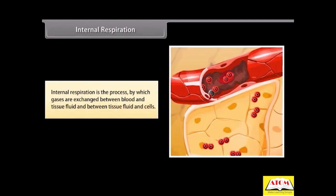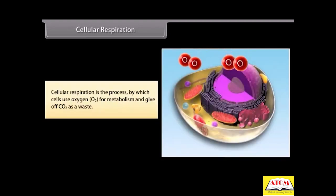Internal respiration. Internal respiration is the process by which gases are exchanged between blood and tissue fluid and between tissue fluid and cells. Cellular respiration is the process by which cells use oxygen for metabolism and give off CO2 as a waste.